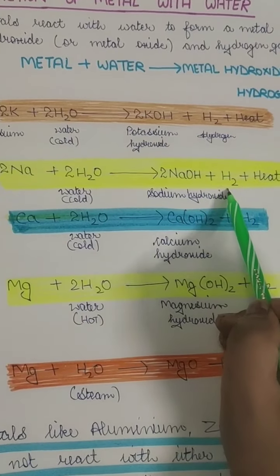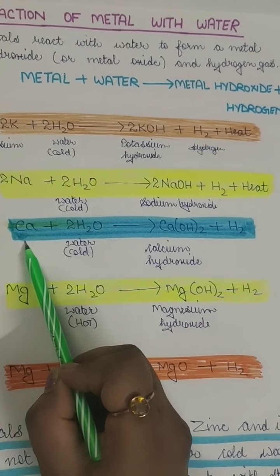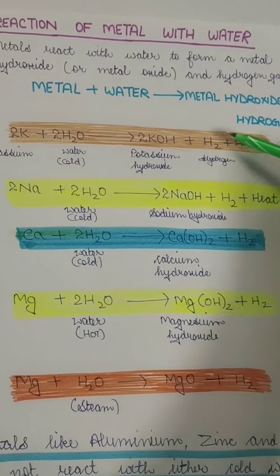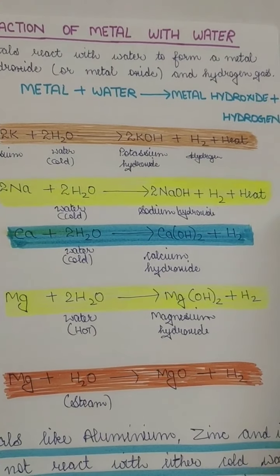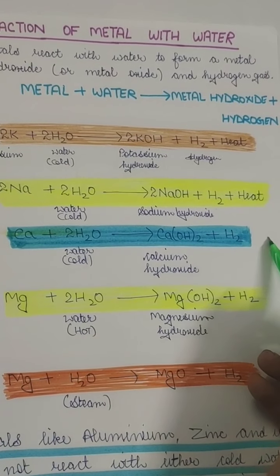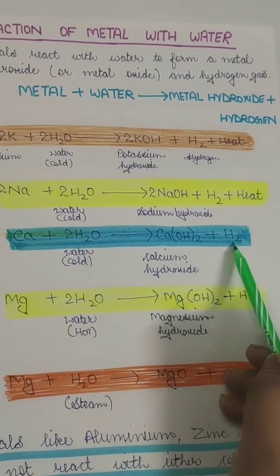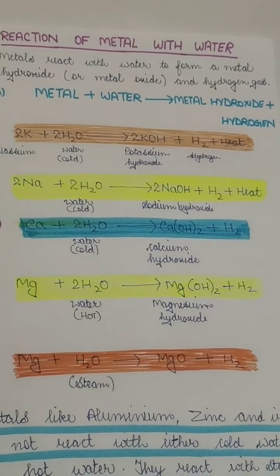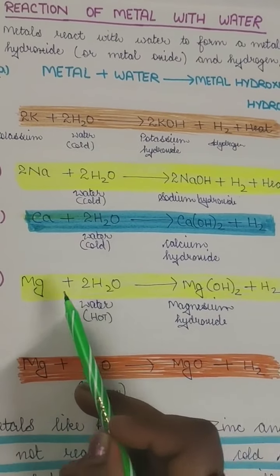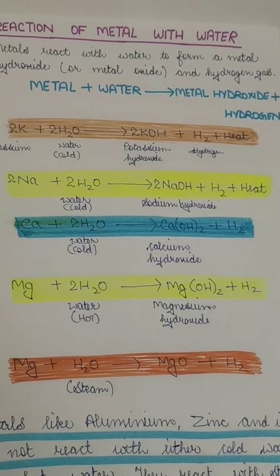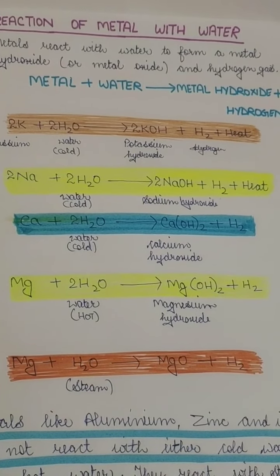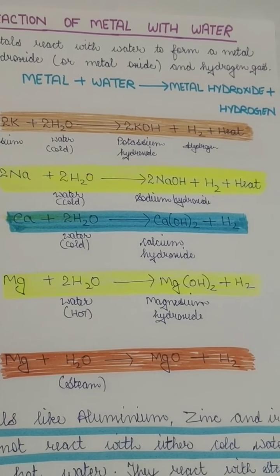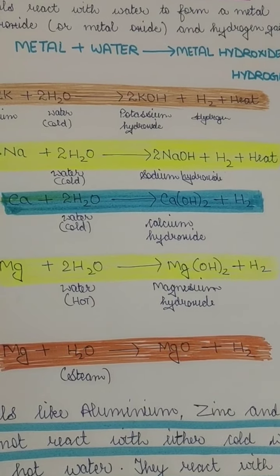One H₂ will be left out, so H₂ — hydrogen gas — is produced. In the case of calcium, calcium reacts with cold water to produce calcium hydroxide and hydrogen gas. Although no heat input is required, heat is also not produced. For magnesium, since it requires heat, we use hot water — magnesium reacts with hot water to produce magnesium hydroxide and hydrogen gas. The product is the same each time: metals react with water to produce metal hydroxide and hydrogen gas. But for potassium and sodium, remember that a lot of heat is produced.